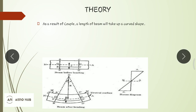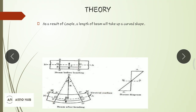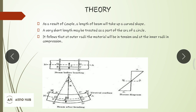As a result of a couple — which is a pair of equal and opposite forces or a moment — the beam will bend into a curved shape, which can be assumed as an arc. In this case we have a sagging moment, meaning the beam is subjected to a positive bending moment. The outer radius will have tensile stress and the inner radius will have compressive stress. In between these layers there is a layer with no bending stress, called the neutral layer.